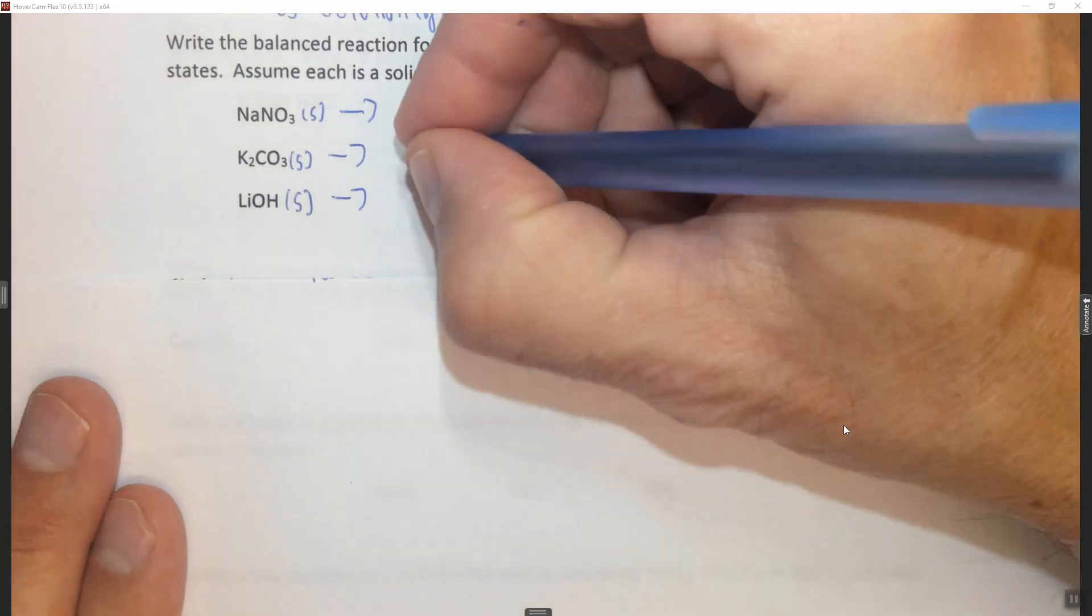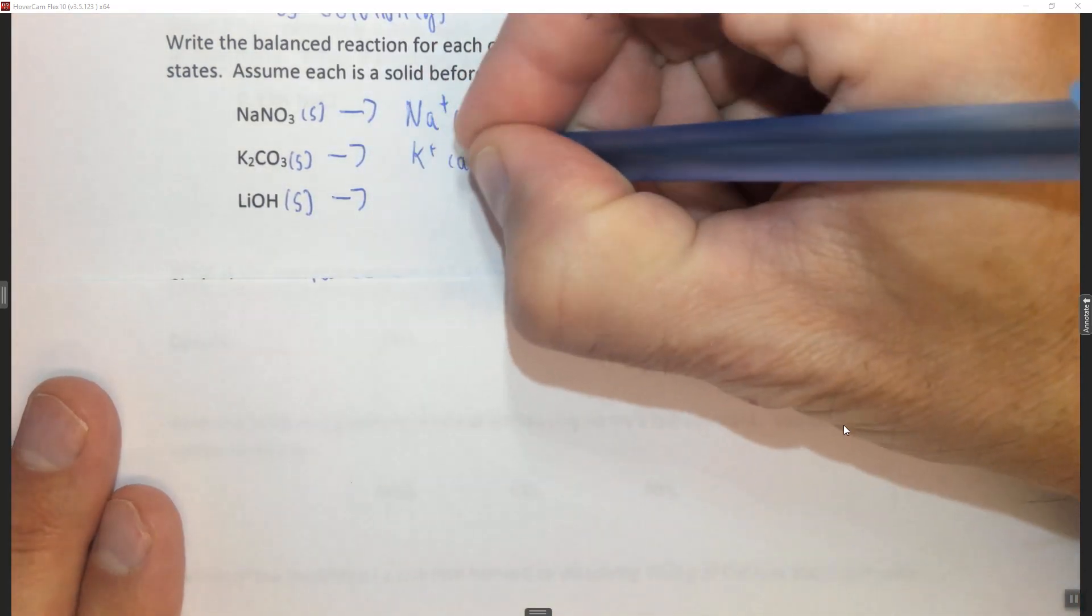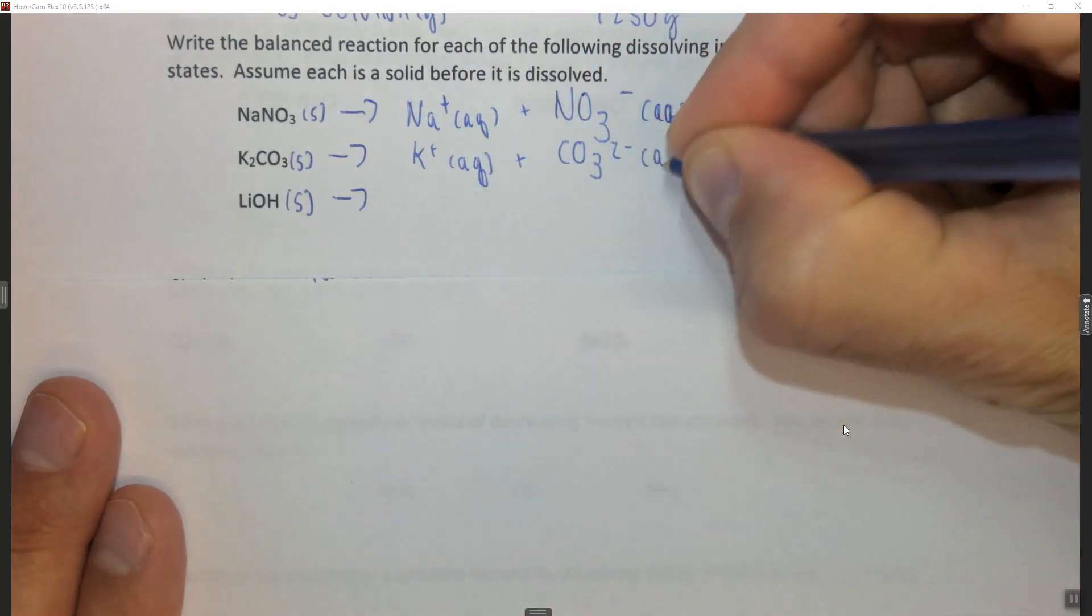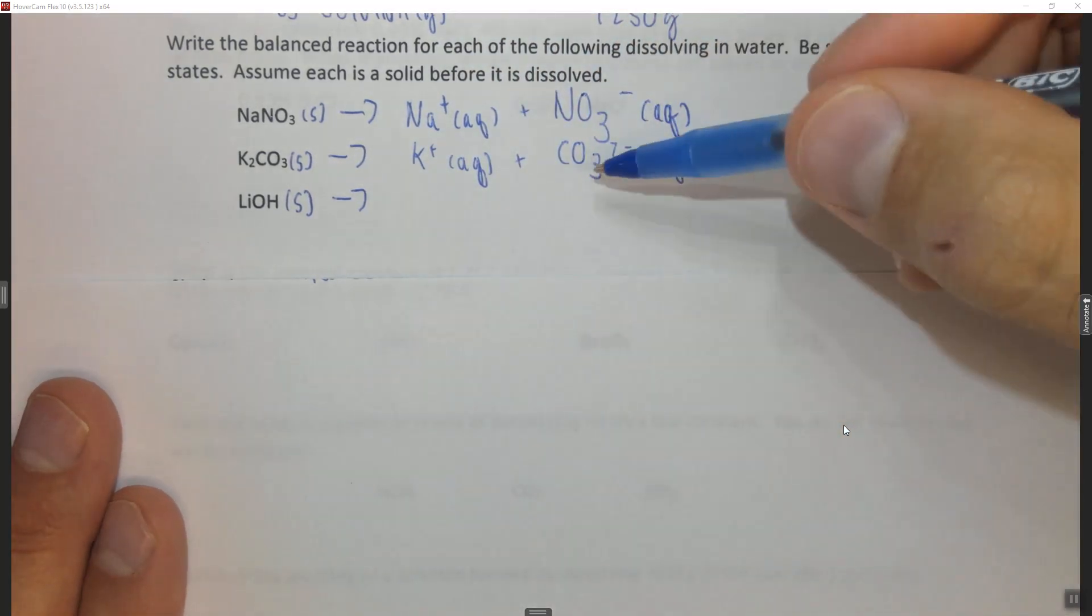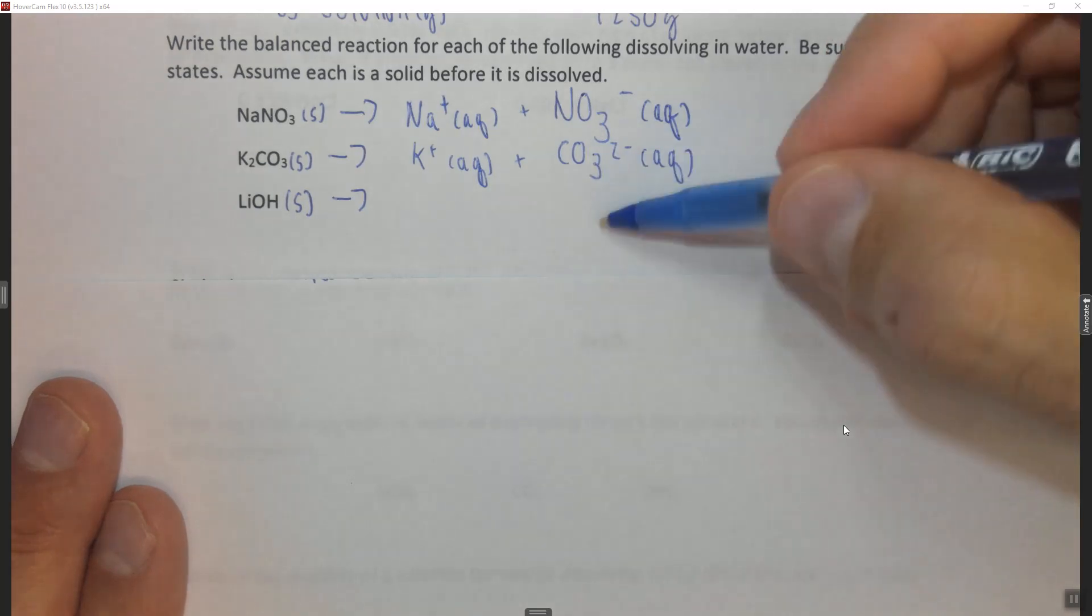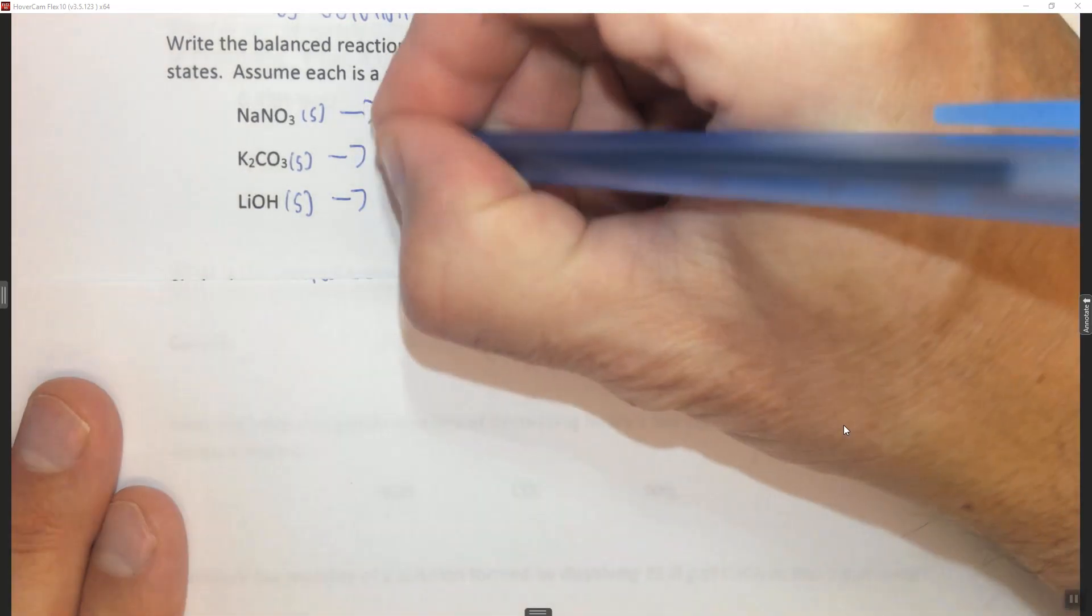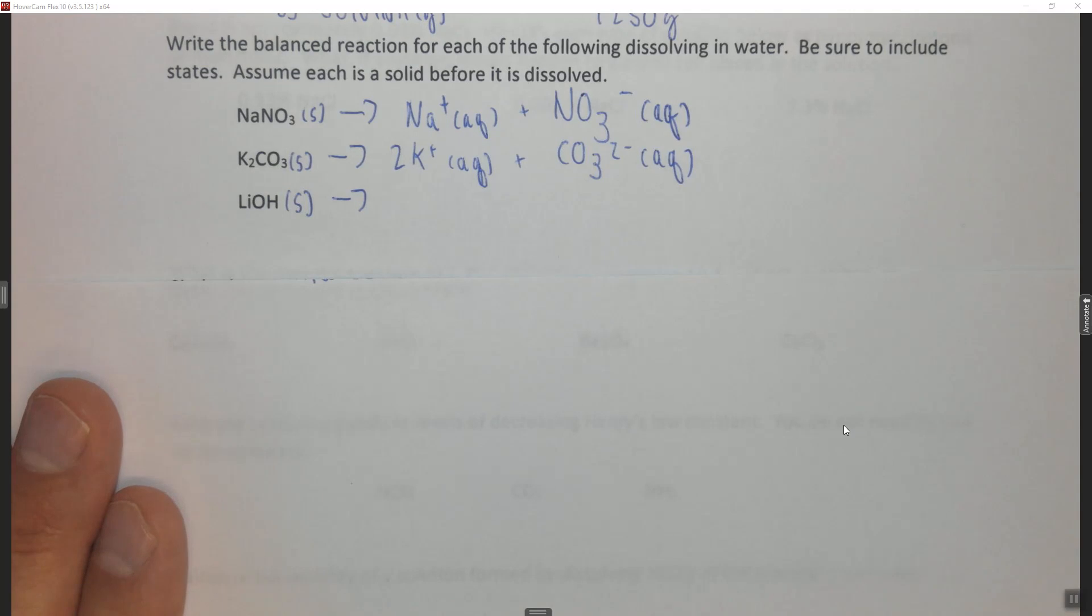Next one, we're going to get K plus as the metal aqueous, and CO3 2 minus carbonate, aqueous. Again we're checking the polyatomic ions to make sure that we get the right ones. Note that there's two K's here, so we have to balance, there's going to be two K pluses here.